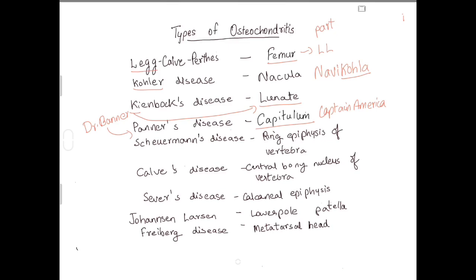Next one is Scheuermann's disease. There is a 'sure man' here, and the man who is sure will give the ring — referring to the ring apophysis of the vertebra.